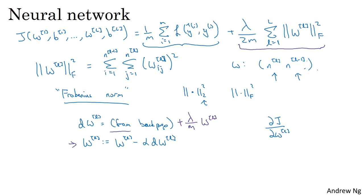And then you just compute this update same as before. And it turns out that with this new definition of dW^[l], this new dW^[l] is still a correct definition of the derivative of your cost function with respect to your parameters, now that you've added the extra regularization term at the end.